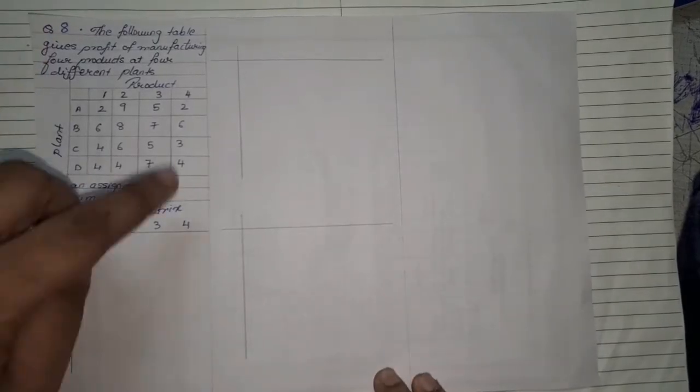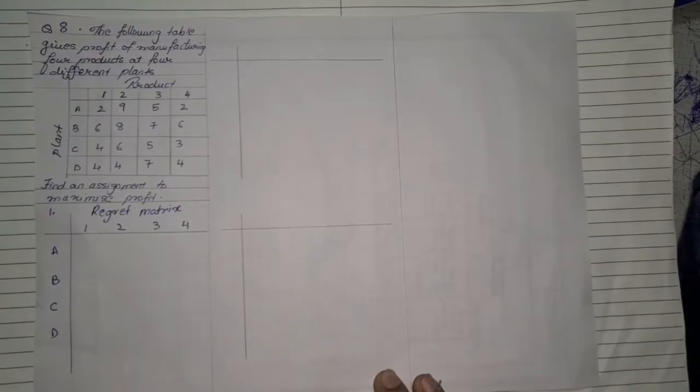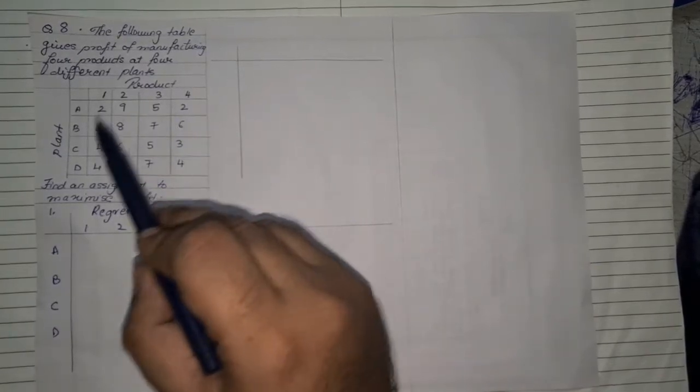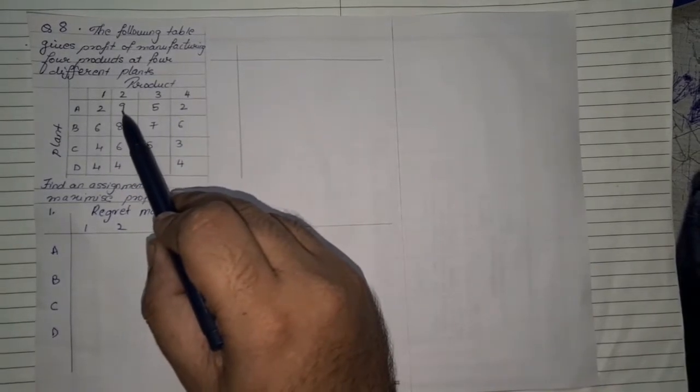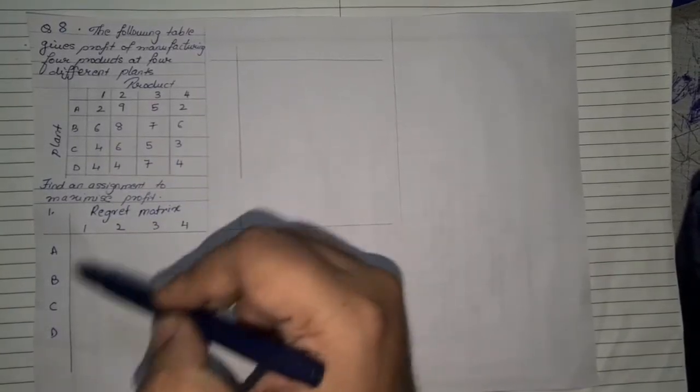The rule is from the question whichever is the highest value that value will be subtracted from all other numbers and we will get a new regret table or regret matrix. So now if you look carefully in the question the highest value which you can see is nine. So it will be nine minus all other values in the entire table to get that new table values.